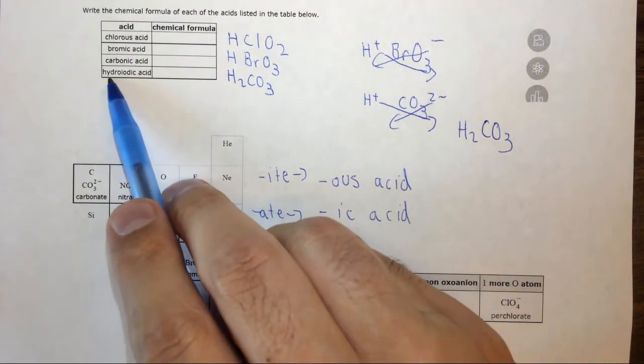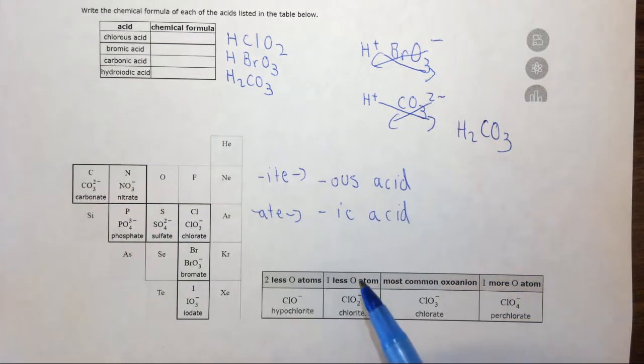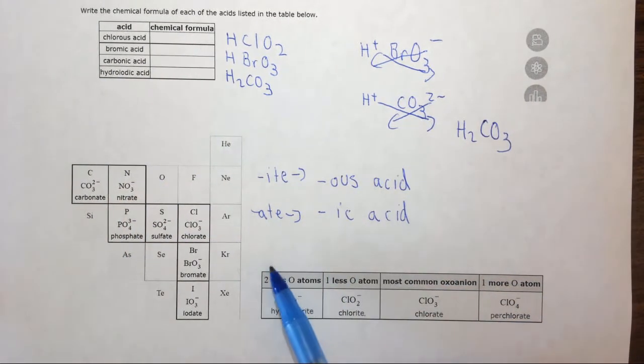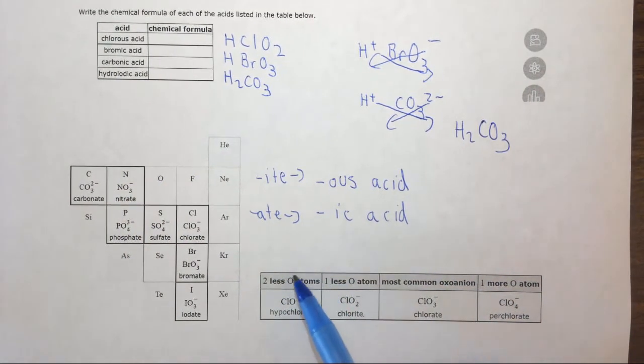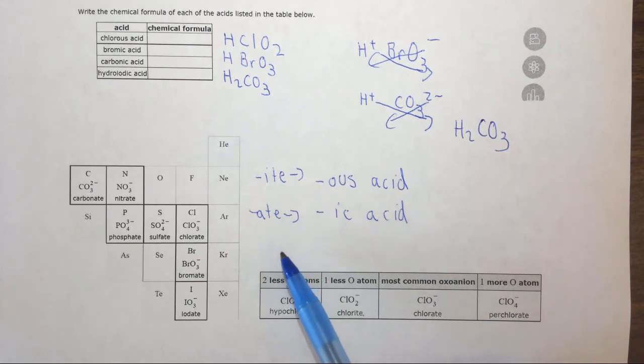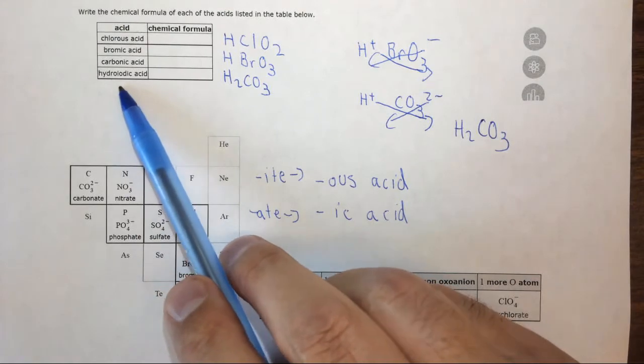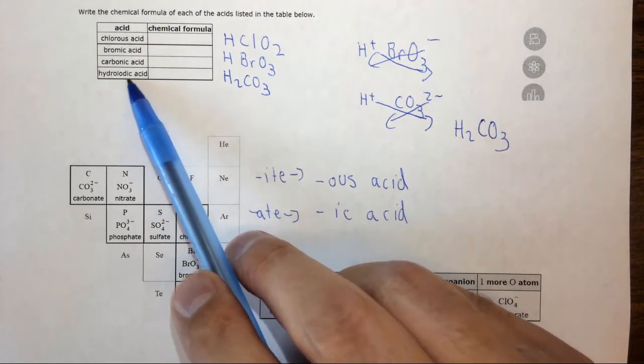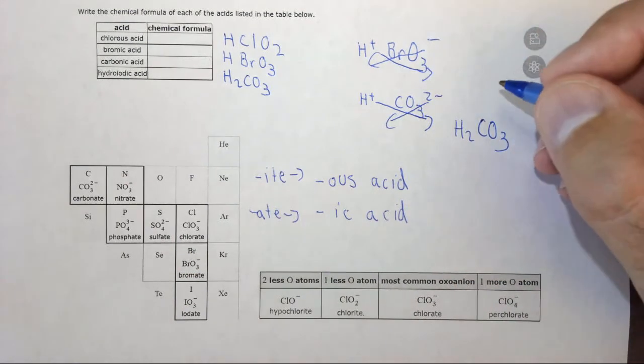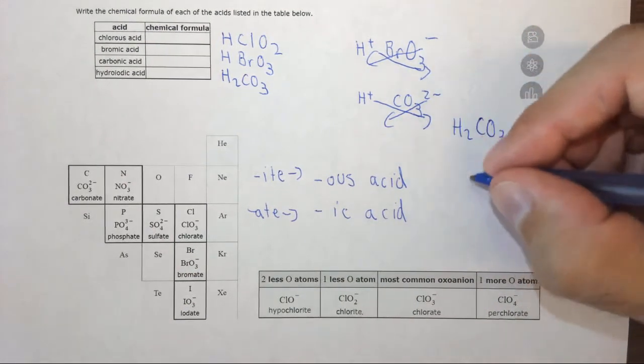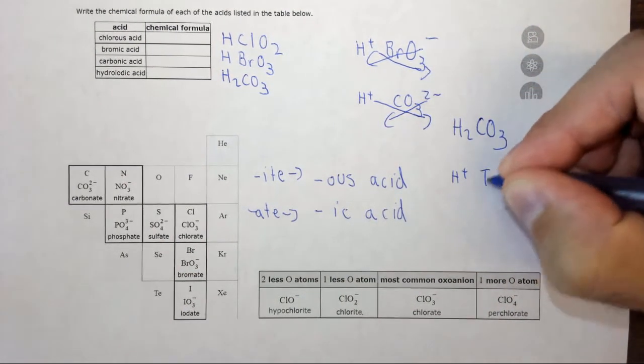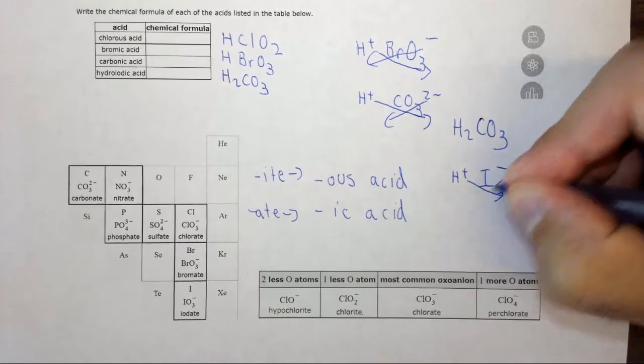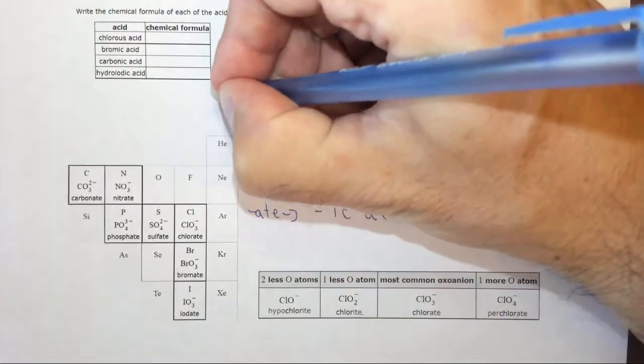Then finally we have hydroiodic acid. Hydro, the prefix here is not really covered. Hydro means monoatomic ion, so this is just iodine, H and I. When iodine forms ionic compounds it's minus charge, so we have H plus, I minus, again there's just one of each, so HI.